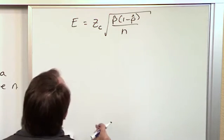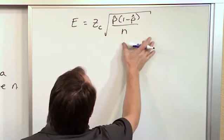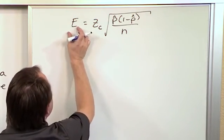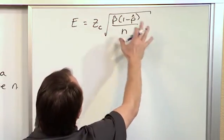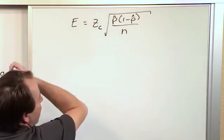Alright, so the first thing we can do is, we can square both sides, because remember, if we square the left hand side, we can do anything we want to the left and the right hand side of an equation, as long as we do it to both sides.